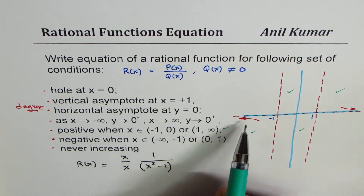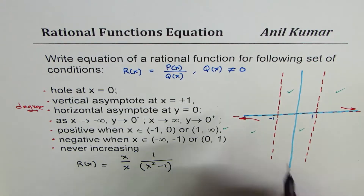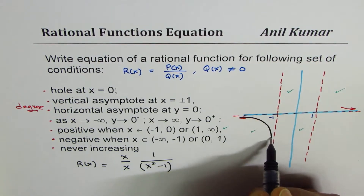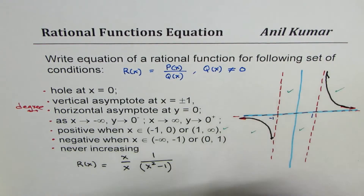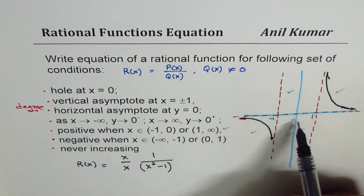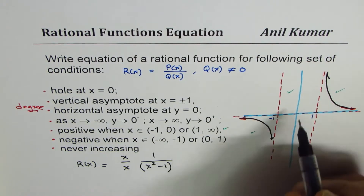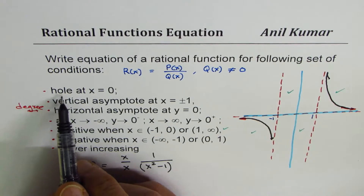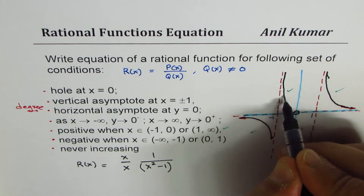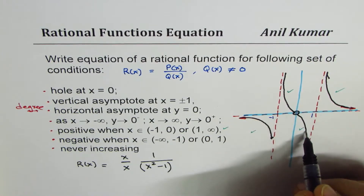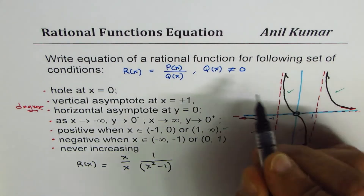Since the function never increases, all parts of the curve are going down. We can connect the pieces: on (−∞, −1) going down, on (−1, 0) going down and positive, then from (0, 1) negative and going down. The curve goes through the region crossing what would be the origin, but since there's a hole at x = 0, we mark a hole at the origin and connect accordingly. That is how we sketch the graph from the given conditions.